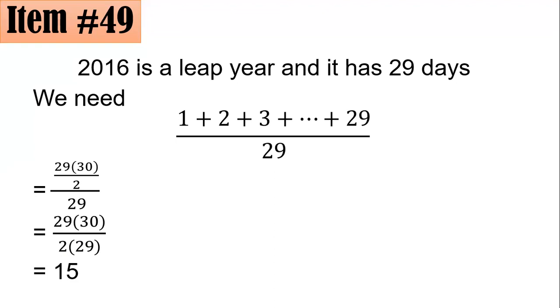Or to make the long story short, there is an easier way. To get the mean of all the numbers there, consecutive numbers, all you have to do is add the first and the last, divide by 2. 1 plus 29, 30, divided by 2, we have 15. And the answer here is letter C. Let's have one more.